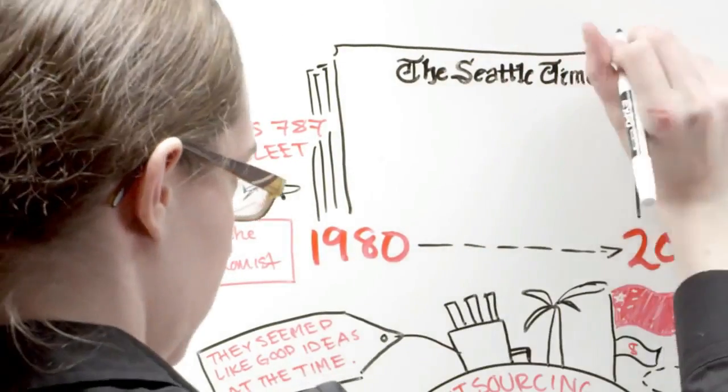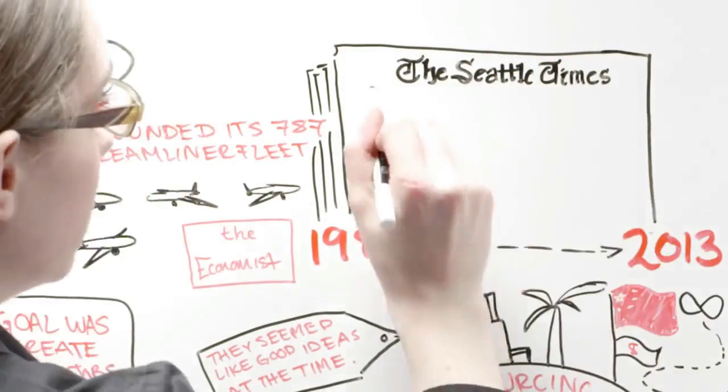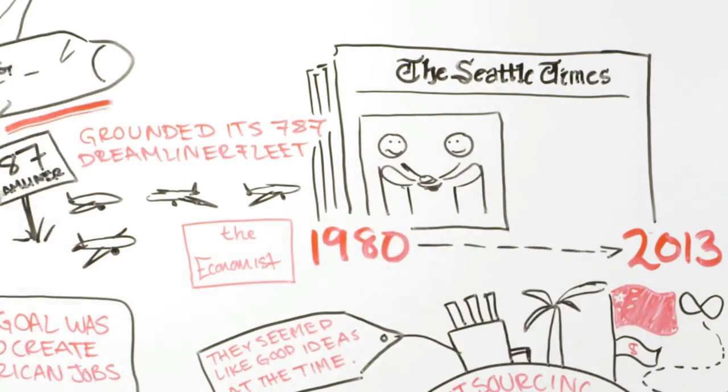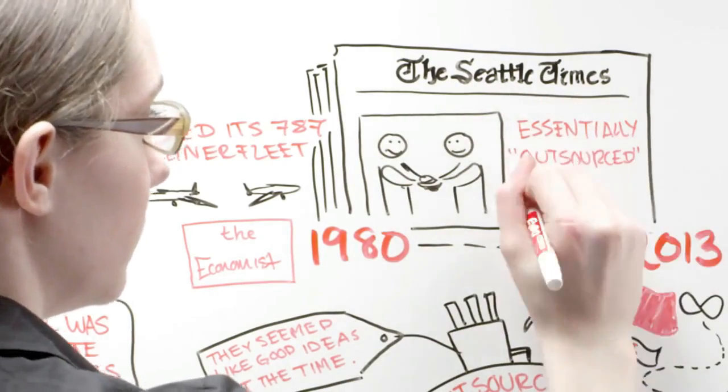According to the Seattle Times, the likely culprit is the hands-off structure of this round of outsourcing, where the company contracted with about 50 top-tier suppliers and essentially outsourced responsibility.